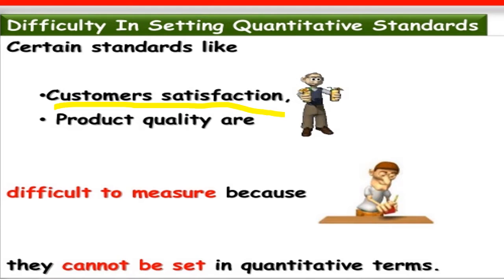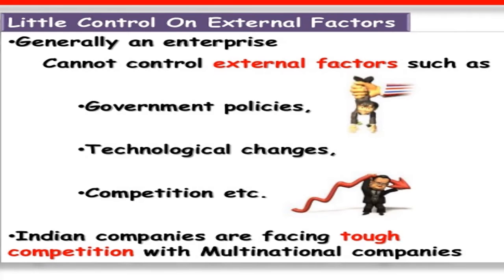When I was working in Accenture, we had email processes with daily targets. Sometimes sudden meetings would interrupt our work, and when we came back with only two hours left, we would not read emails in detail. Large emails would be kept for the next day because there was no time. The lesson is: when setting standards, ensure they are achievable qualitatively — never set standards just for namesake.